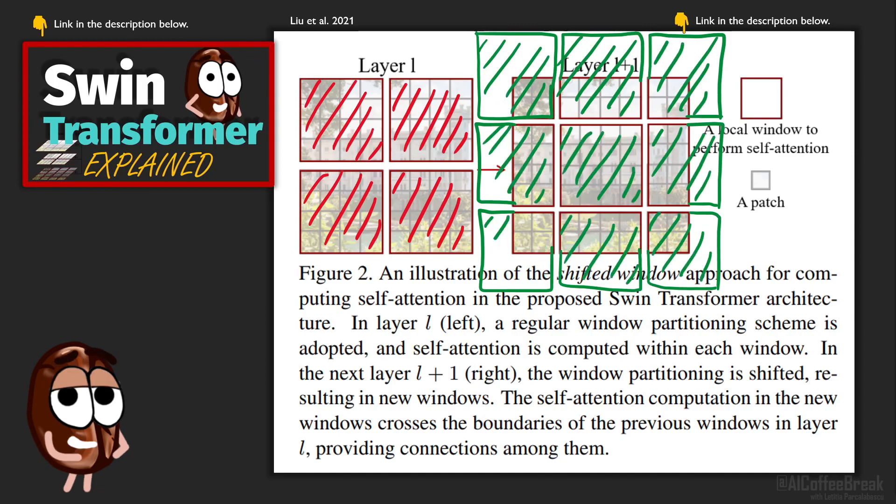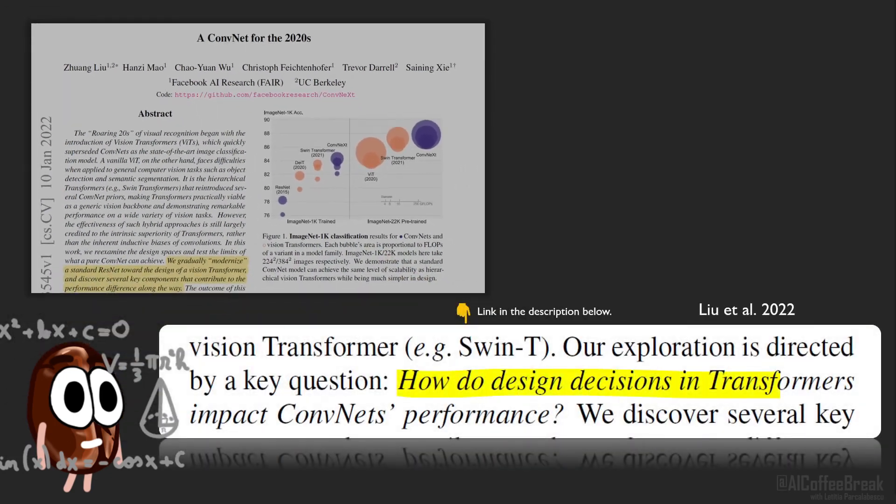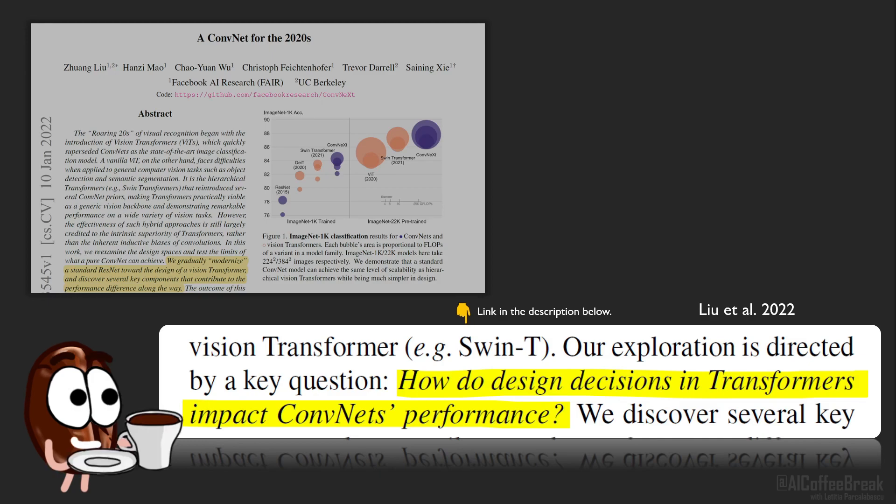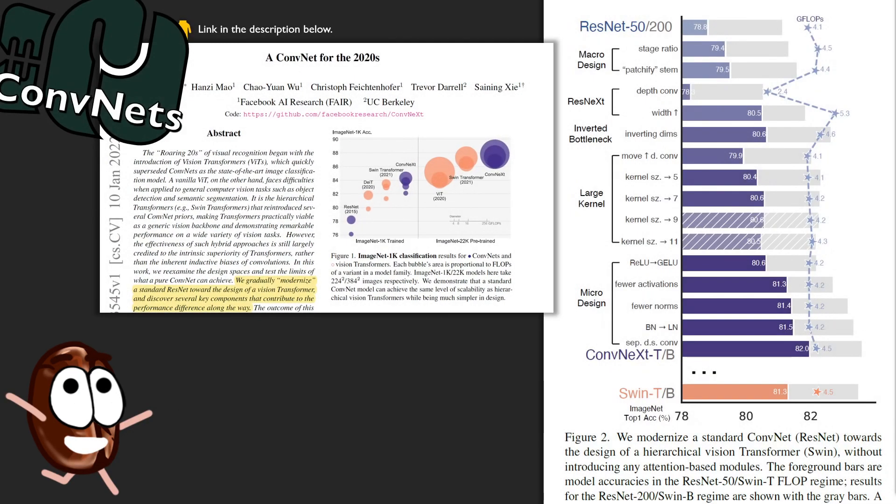Noting this, the authors cannot help but ask themselves what if they would morph a convnet towards a Swin transformer? What would we see from this interpolation to answer the question we cite, how do design decisions in transformers impact convnets' performance? And imagine the authors wanted to know the answer to this so badly that they run the according experiments and write a paper about this.